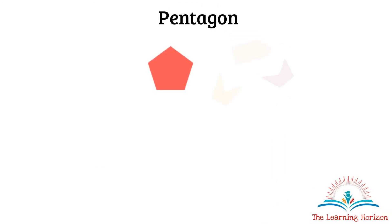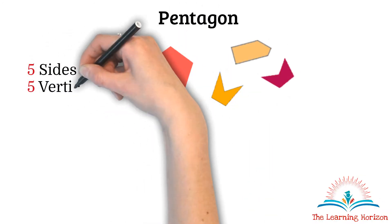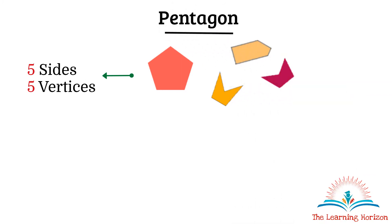A closed shape with five sides and five vertices is called a pentagon. Some examples of a pentagon are as shown.